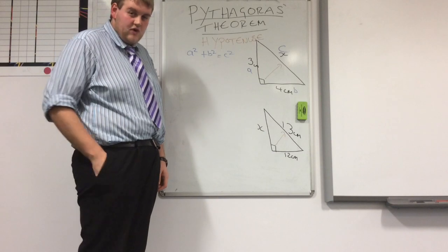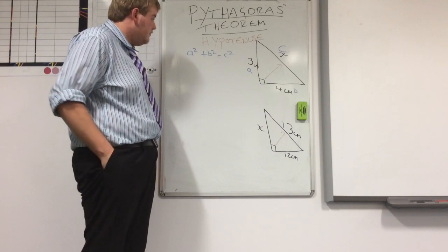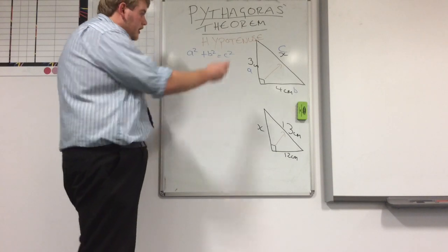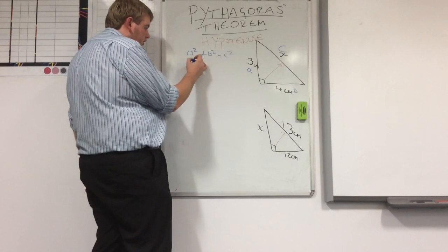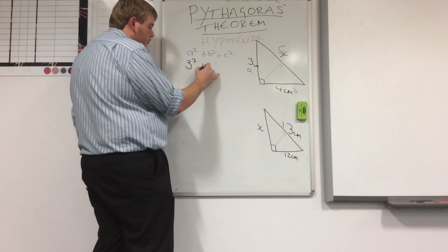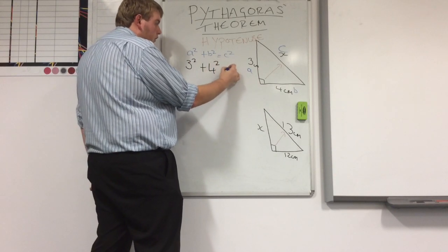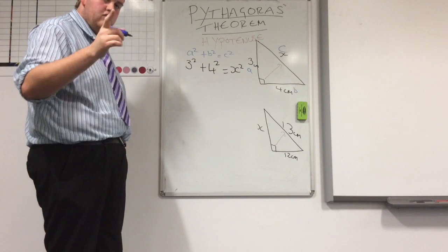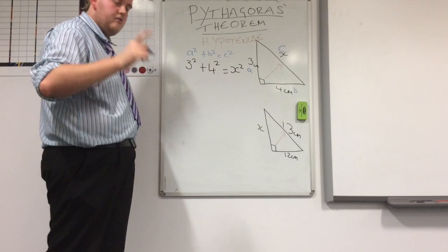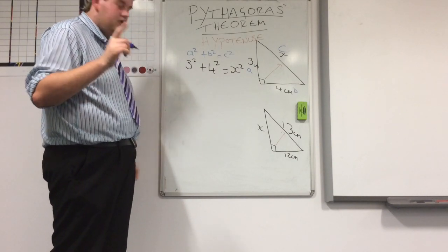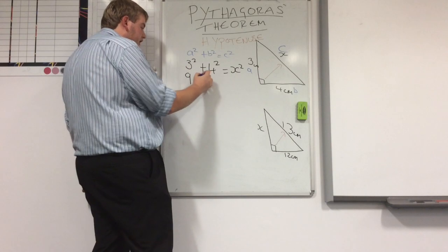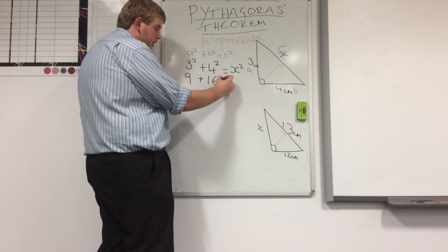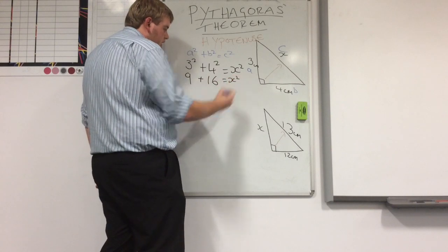We've got A squared plus B squared equals C squared, so now we can plug our numbers in to find out what C is. A we know is 3, B we know is 4, we don't know what C is — we leave that as our X. Now, 3 squared — remember square numbers, times it by itself — 3 times 3 is 9. 4 times 4 is 16. Equals X squared.